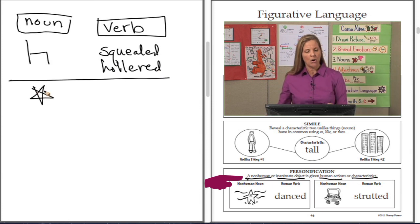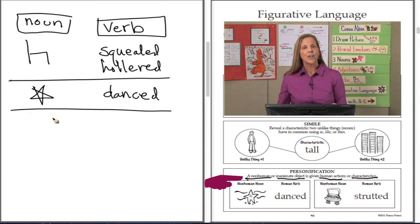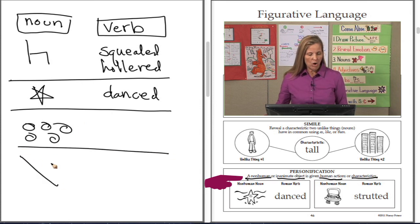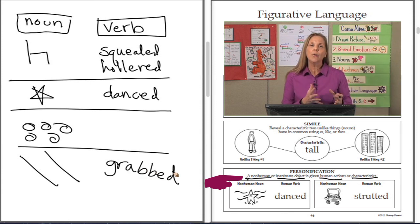The chair squealed and hollered when the fat man sat down. Inanimate object? Stars. What did they do? They danced across the sky. The car, as you can see in our example, strutted down the road. The pebbles whispered as the little girl scooted down the path. The dark alley grabbed at the boy when he walked by.